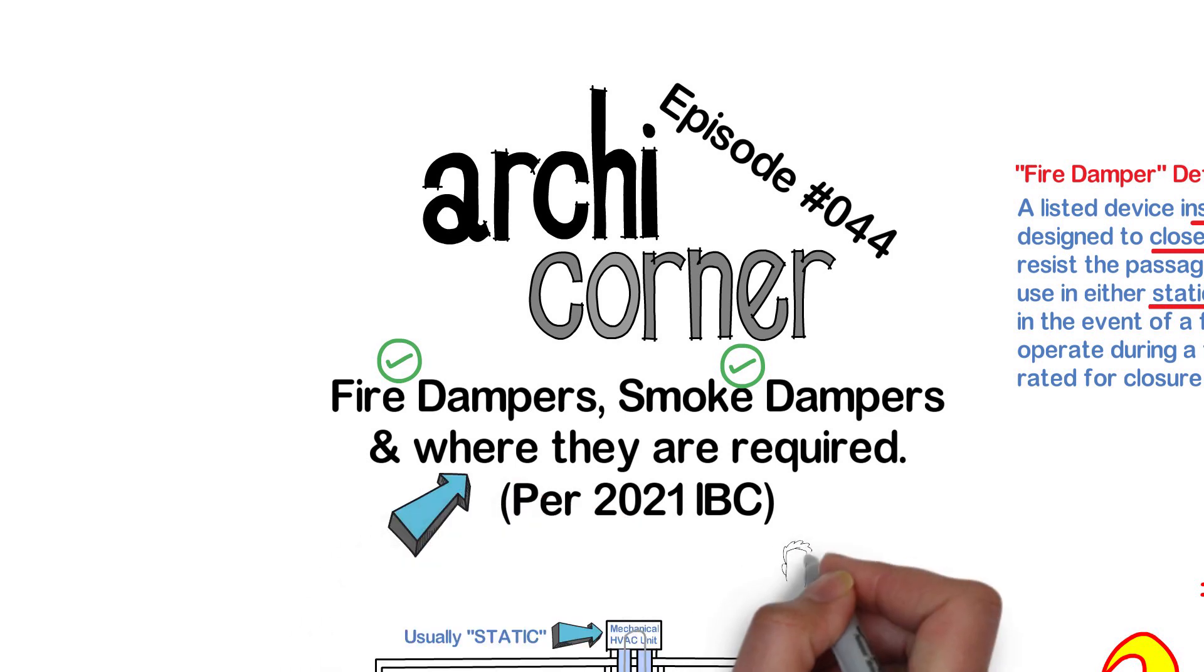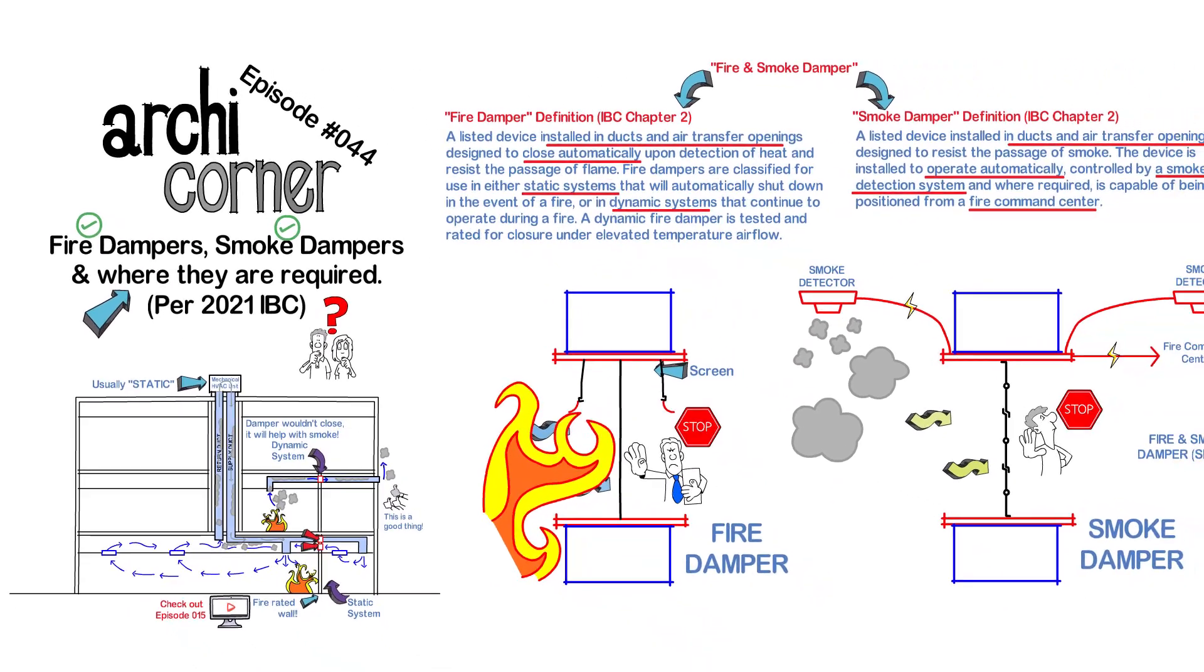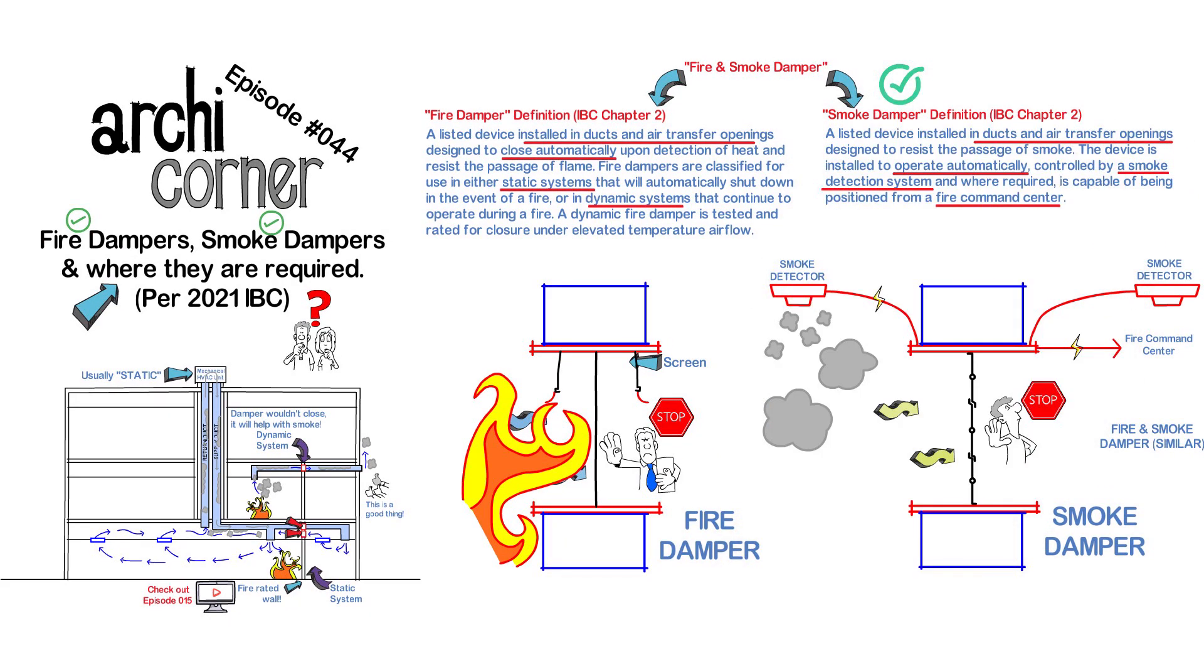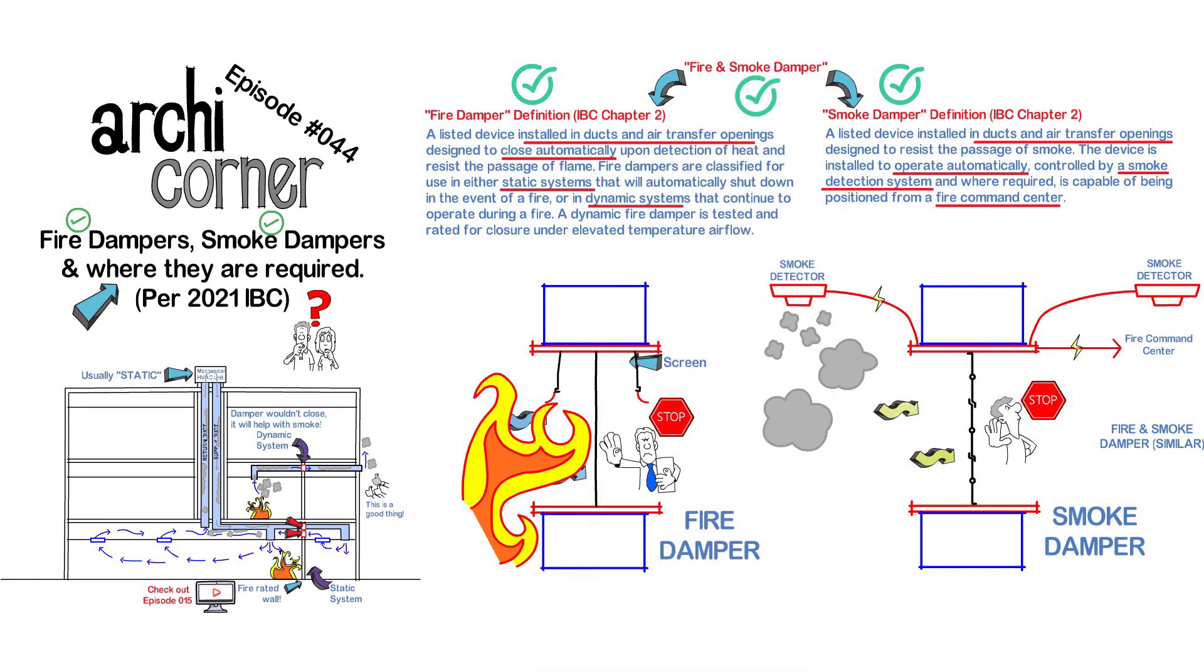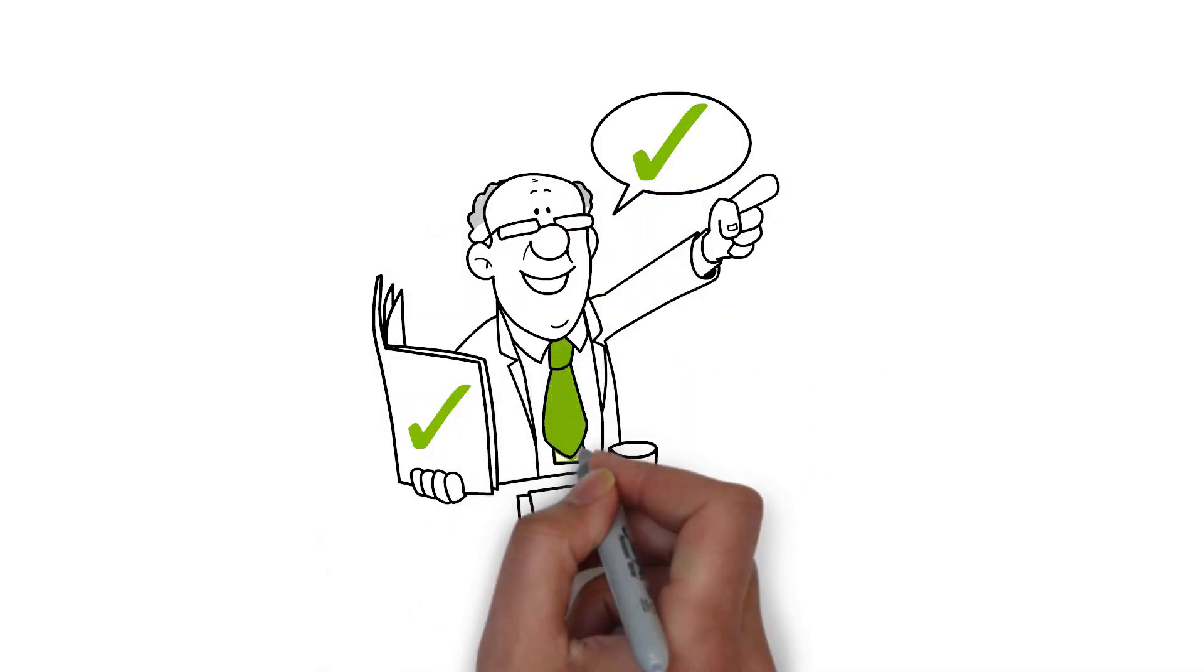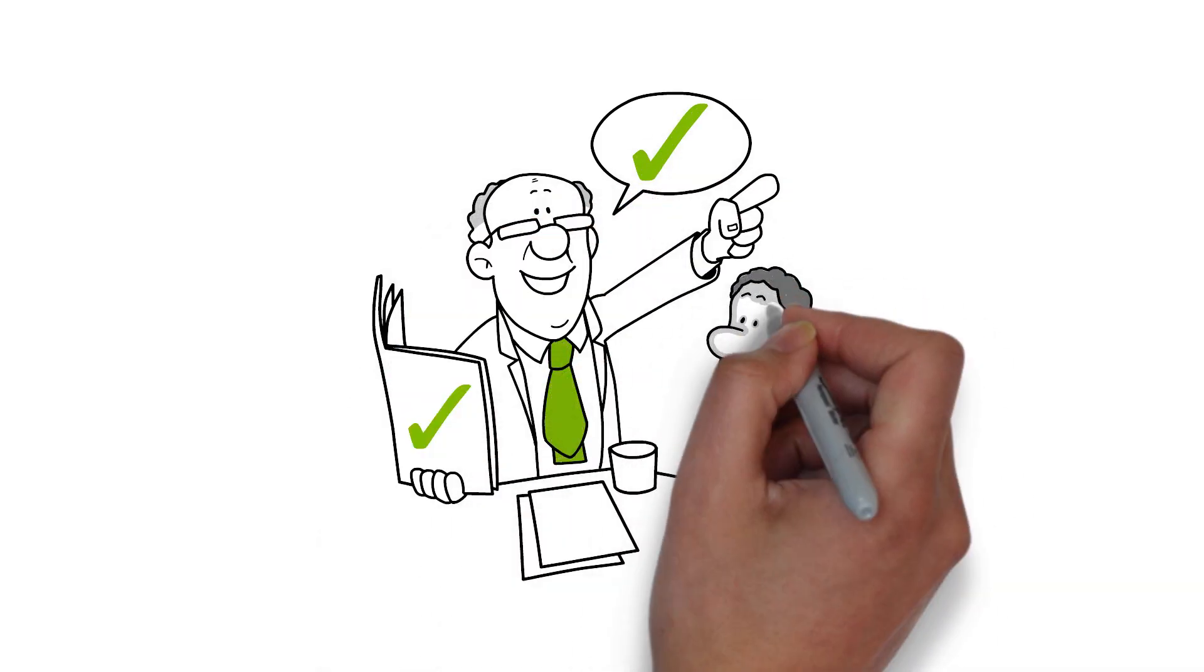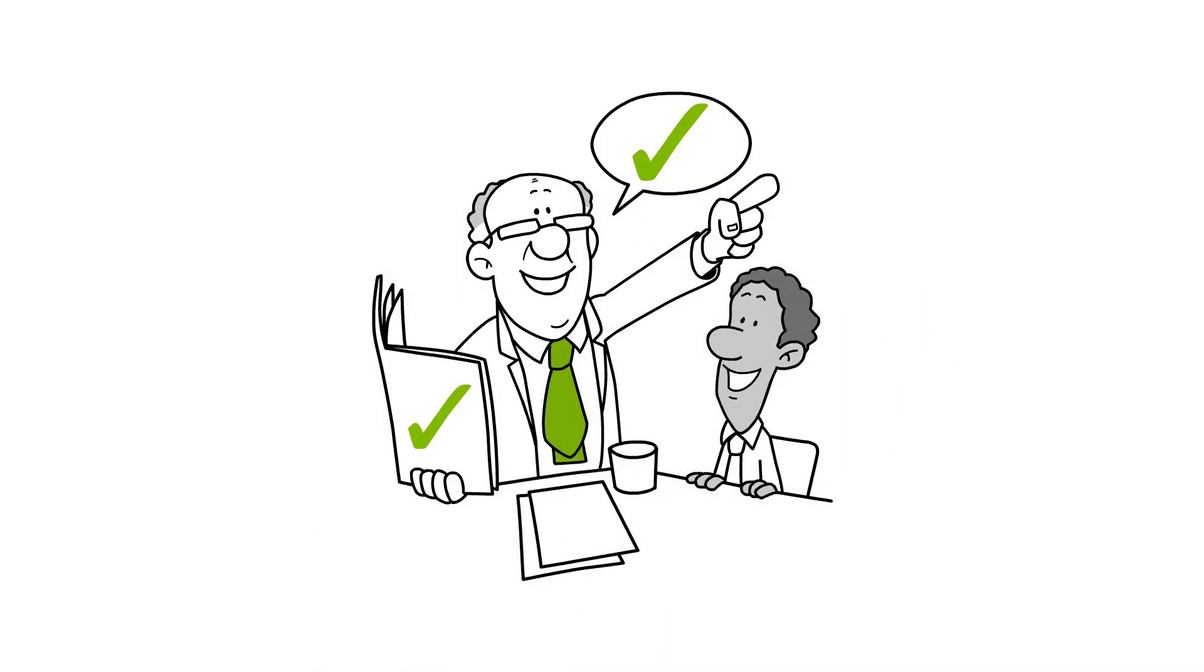The next question is, where are they required? This is where it gets a bit tricky. The reason is that some areas require smoke dampers, other areas require fire dampers, and yet other areas require smoke and fire combination dampers, which as mentioned before, is a unit that does both. So here's what I will do. I will let you know what the code requires, but for the specifics, you must read the code and find out more. But don't worry, I will let you know what sections to look at.